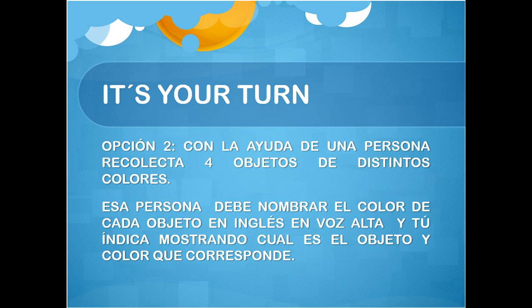O opción 2: con la ayuda de una persona, recolecta 4 objetos de distintos colores. Esa persona debe nombrar el color de cada objeto en inglés en voz alta y tú indicar mostrando cuál es el objeto de color que corresponde. Por ejemplo, si la persona te dice blue, ¿cuál de esos cuatro objetos es de color blue? Y tú tienes que indicar cuál es.